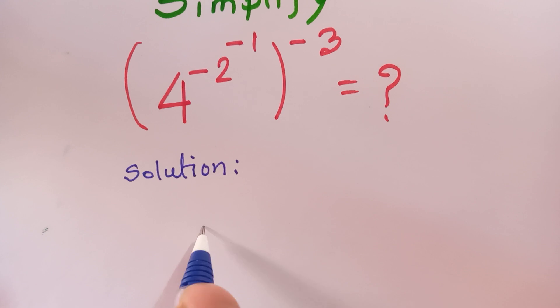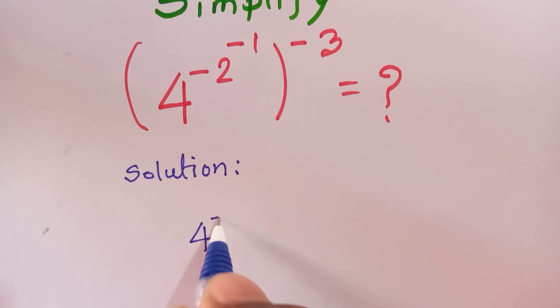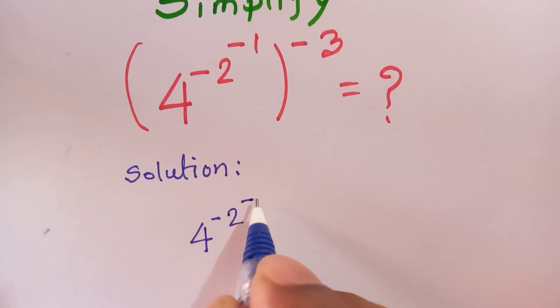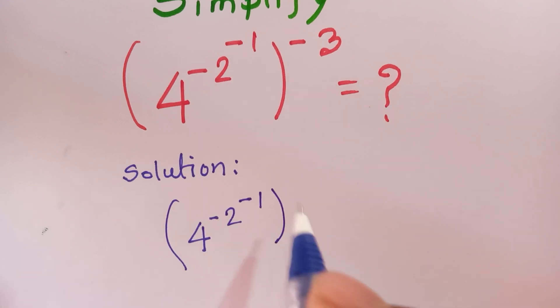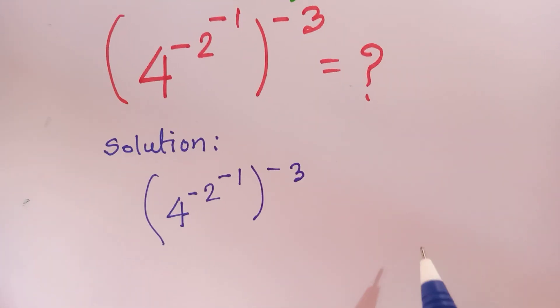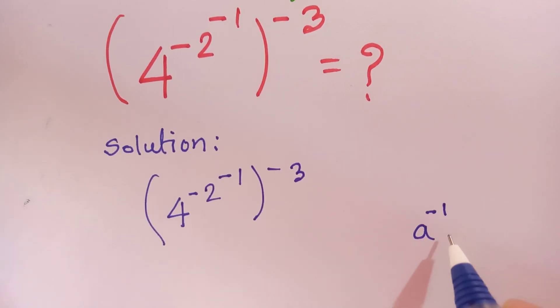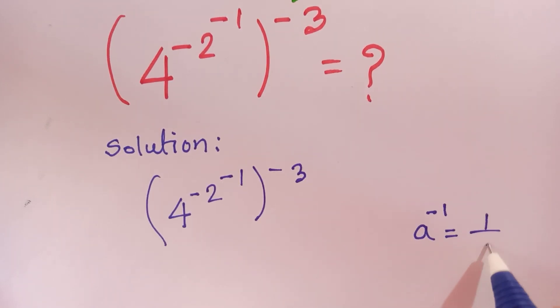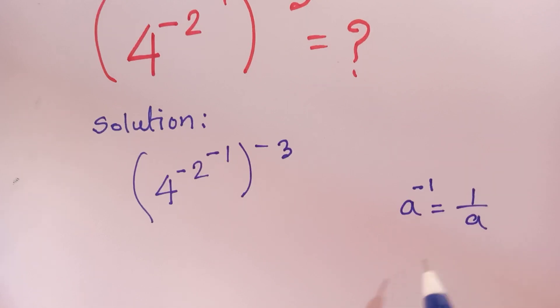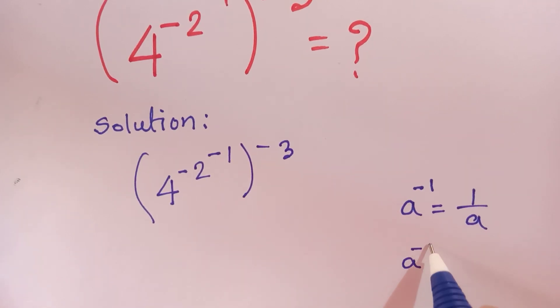(4^(-2^(-1)))^(-3). We know that a^(-1) is equal to 1 over a, and a^(-2) is equal to 1 over a squared.